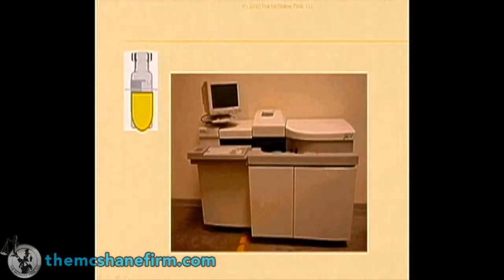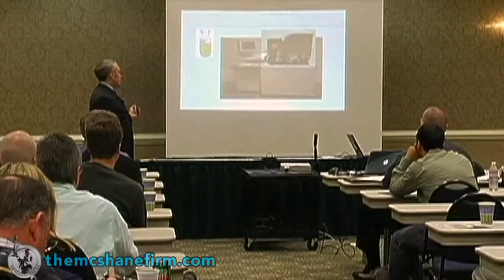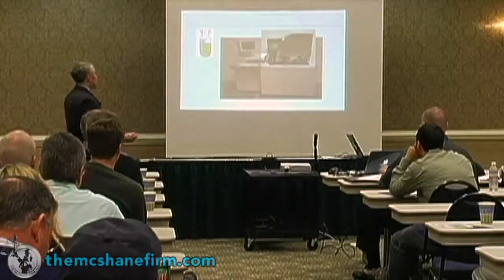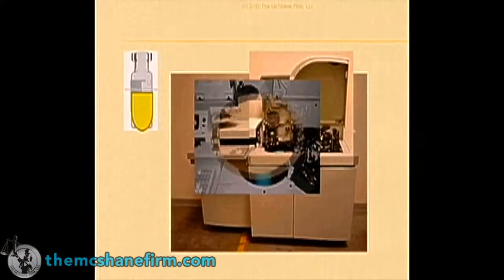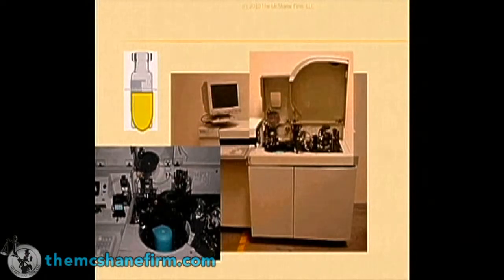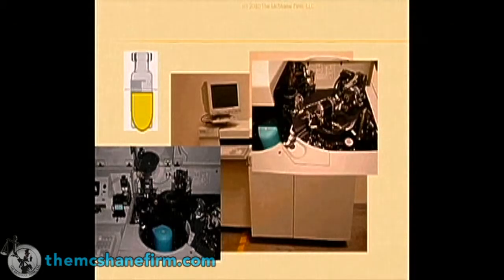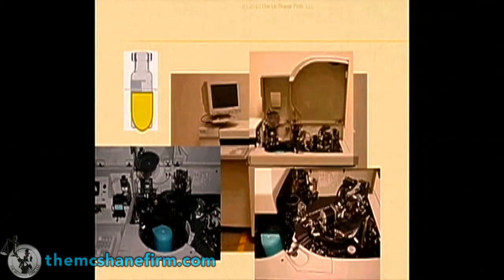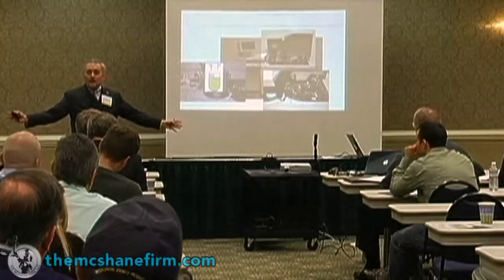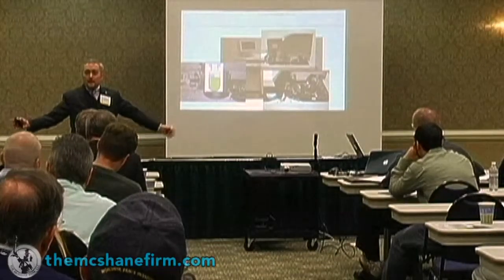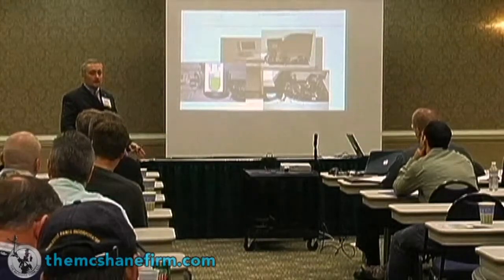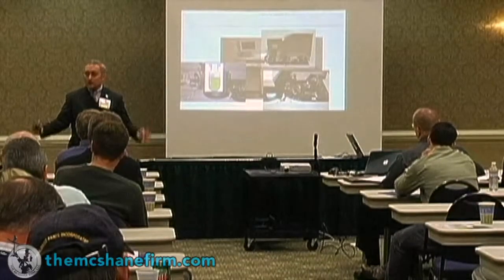In your pipette is only that yellow viscous material. They take it over to an analyzer — this is a Dimension RXL Max, a highly complicated machine. But the most important thing is that it is only testing, through that reagent process, the yellow viscous material. The only thing that makes it to the machine, out of all of the blood — out of your entire whole blood — is that yellow part, the plasma part. So it's not a test on whole blood; it is a test on the yellow part, the supernate.